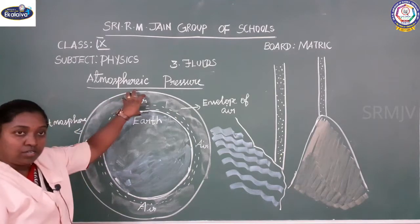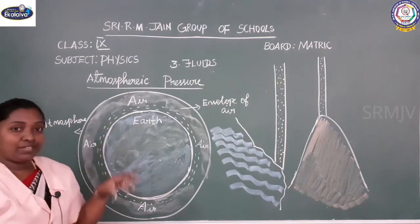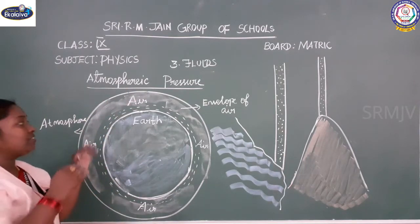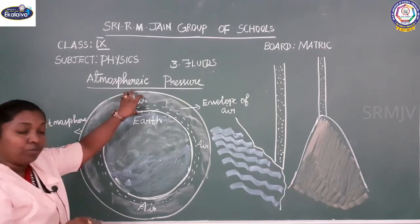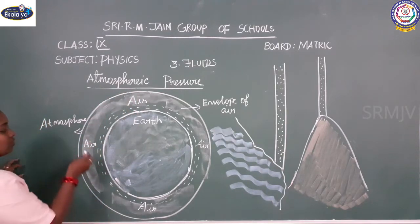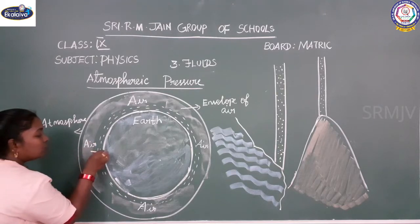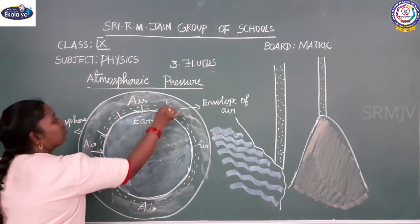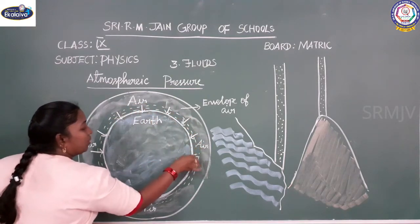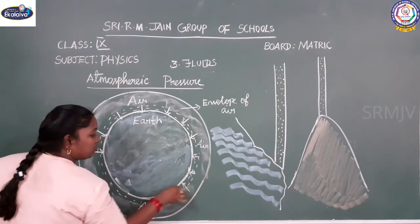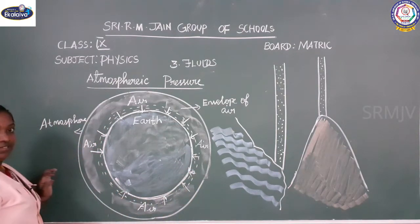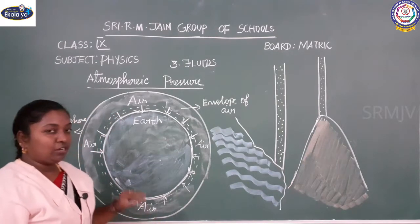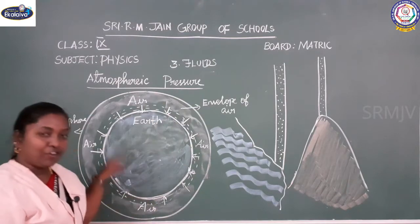The air surrounding the earth occupies space — a certain height — which means it has volume. Since it has volume, it will exert pressure. The air exerts its force perpendicular to the surface of the earth. That is called atmospheric pressure.